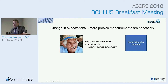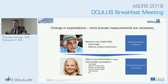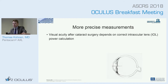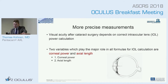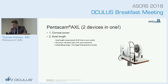The change of expectation in patients is there — more precise measurements are necessary nowadays. From the time when simple biometry was sufficient, I think we have moved into an area where patients, when we're talking about multifocal lenses, want to see at near, intermediate, and distance. If we do measurements correctly, we have better outcomes. For IOL calculation, two variables are very important: corneal power and axial length. That brings us to the Pentacam AXL — two devices in one machine — which measures both corneal power and axial length.